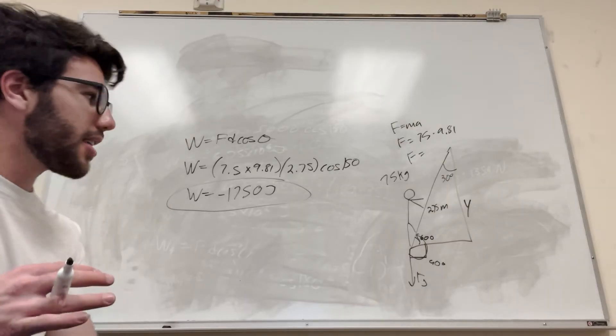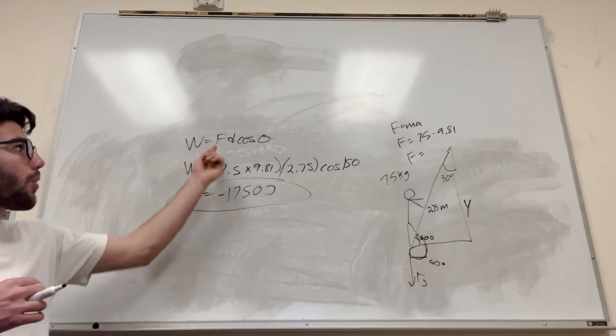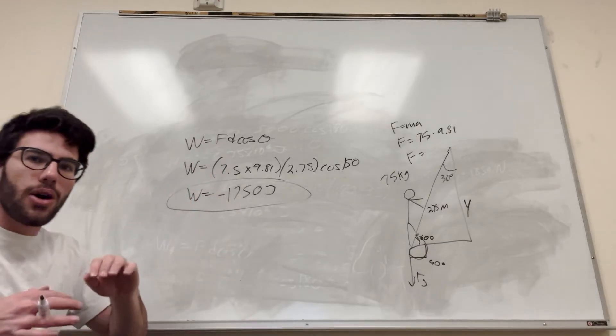So we're just looking at gravity here. Let's look at our formula here. Work is equal to force, distance, cosine of theta. Okay, so force. The force of gravity is always constant, right?